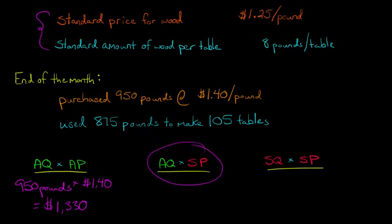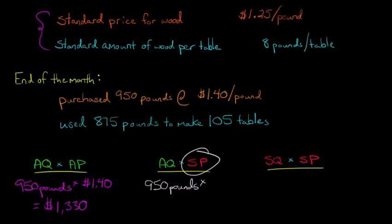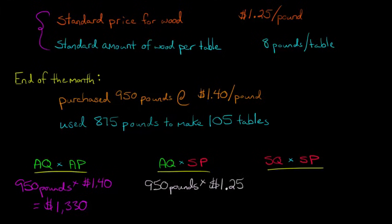Now we go to the middle column. The actual quantity stays the same — 950 pounds — but now we're multiplying it by the standard price. The standard price is what we said at the beginning we shouldn't have to pay more than, so we plug in $1.25. Multiplying 950 pounds by $1.25 gives us $1,187.50. Now, before we even get to the third column, we have enough information to compute our price variance.